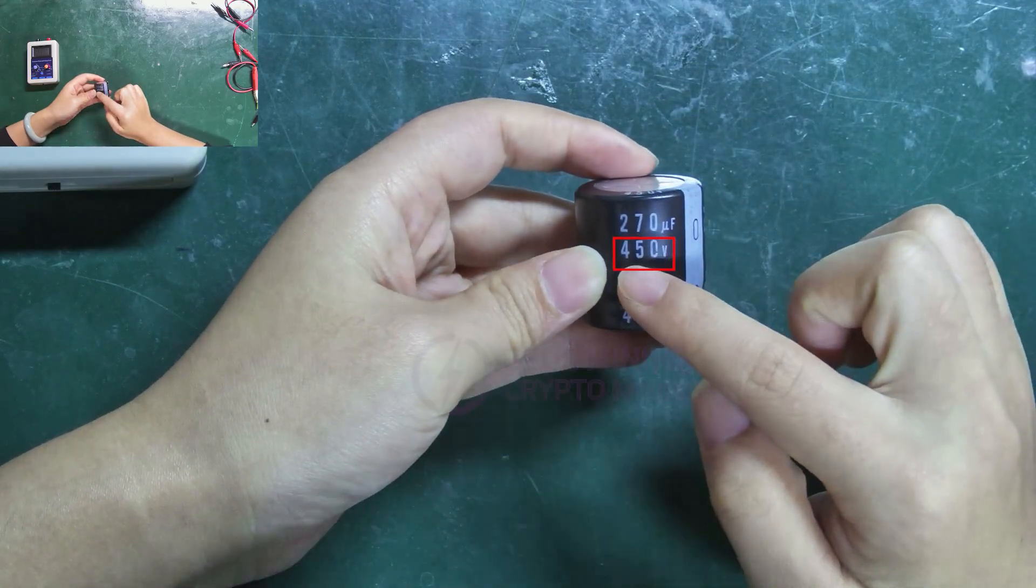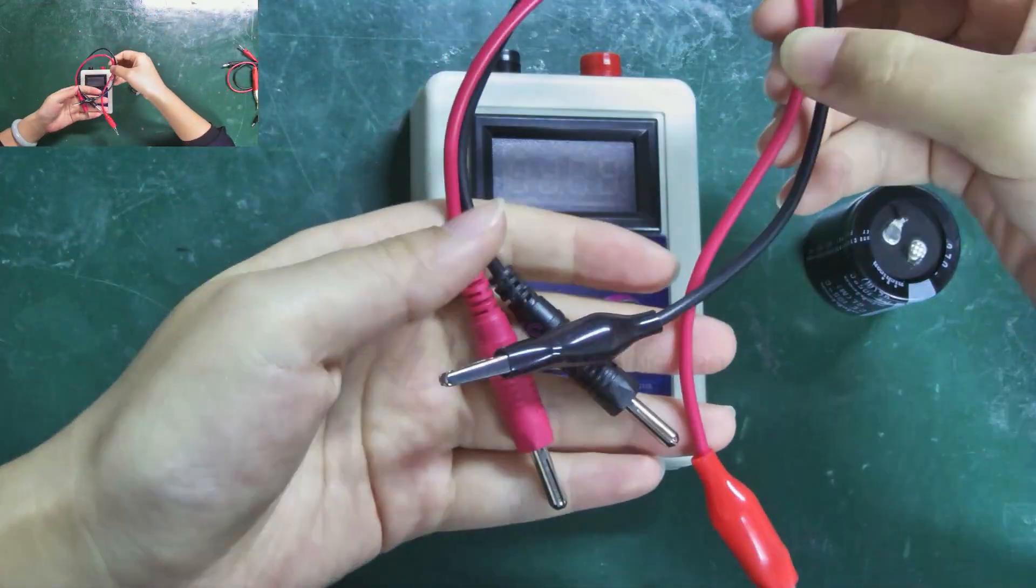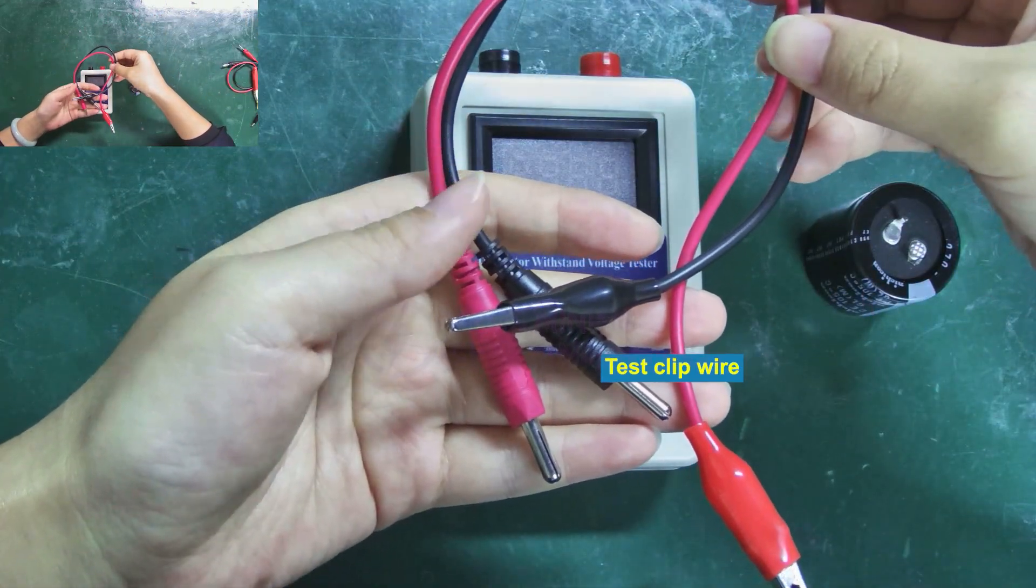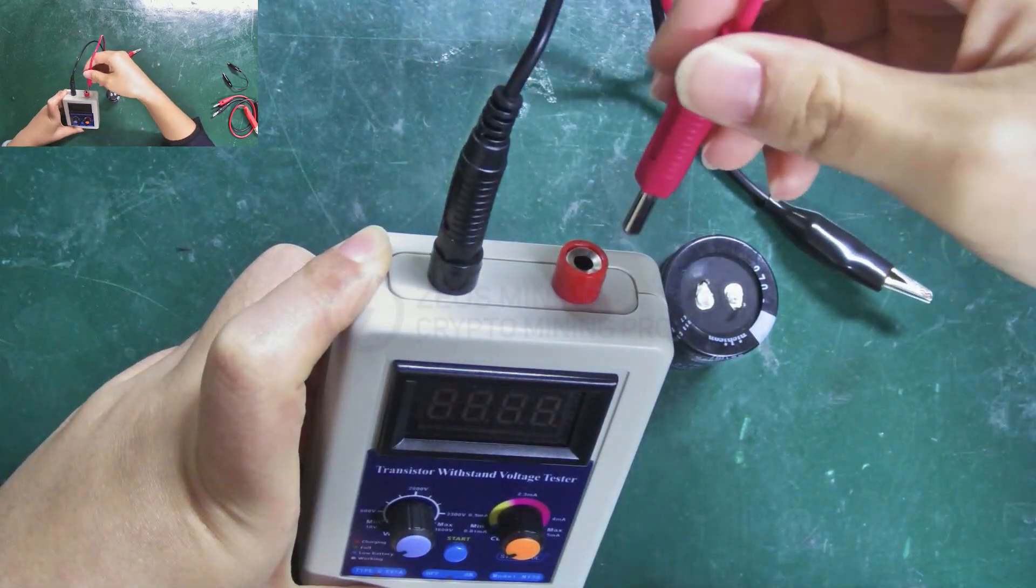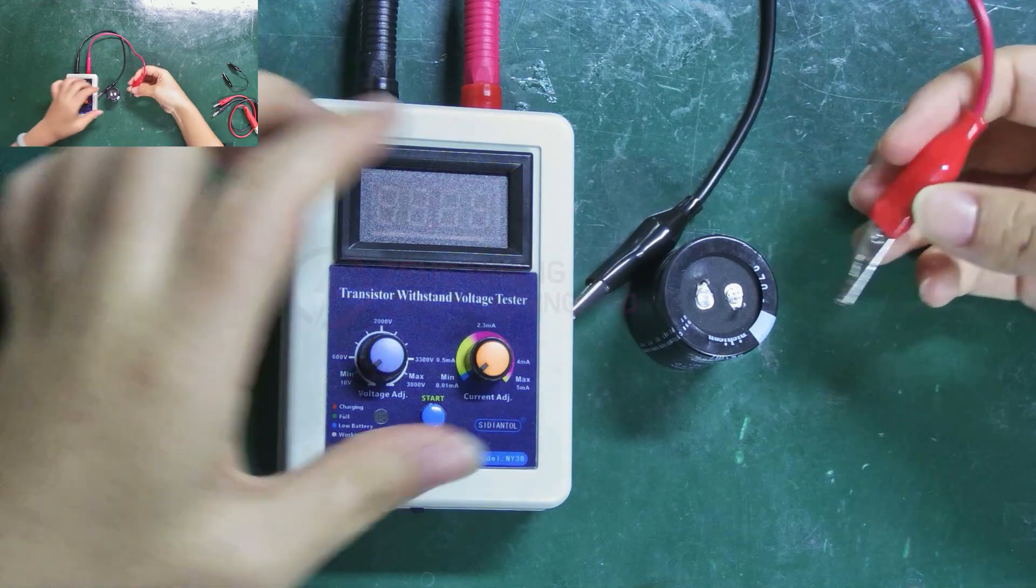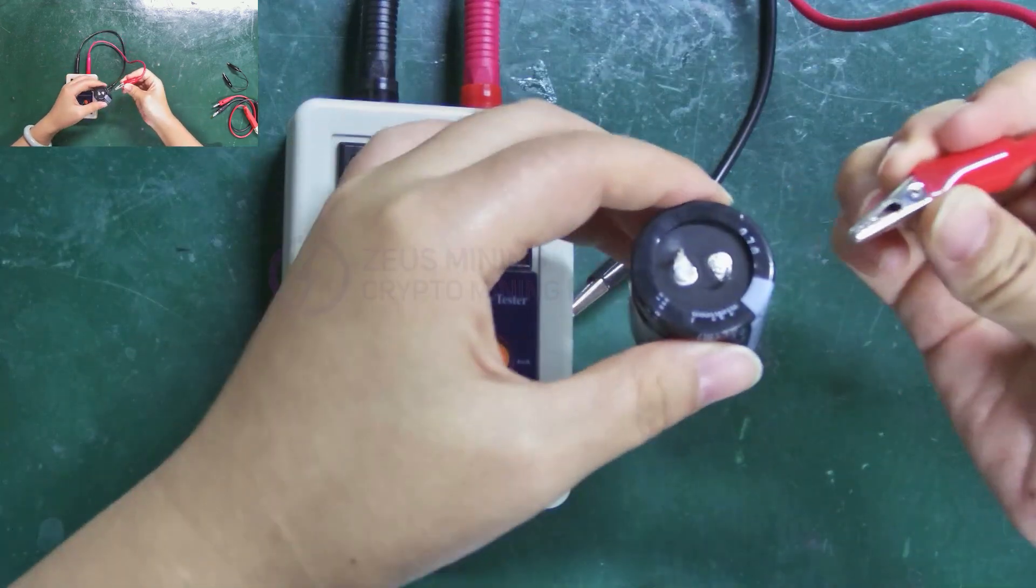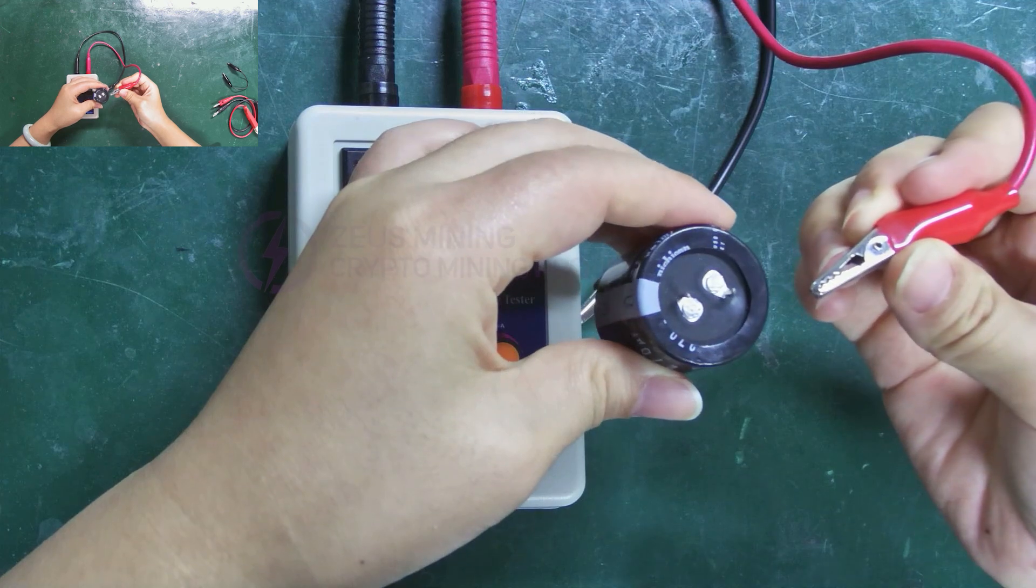First, let's measure this 450 volts large electrolytic capacitor. Here, we will use the test clip wire. Connect the black clip to the negative output and the red one to the positive output. Remember, it's important to distinguish between the positive and negative terminals of the capacitor. Don't connect them incorrectly.